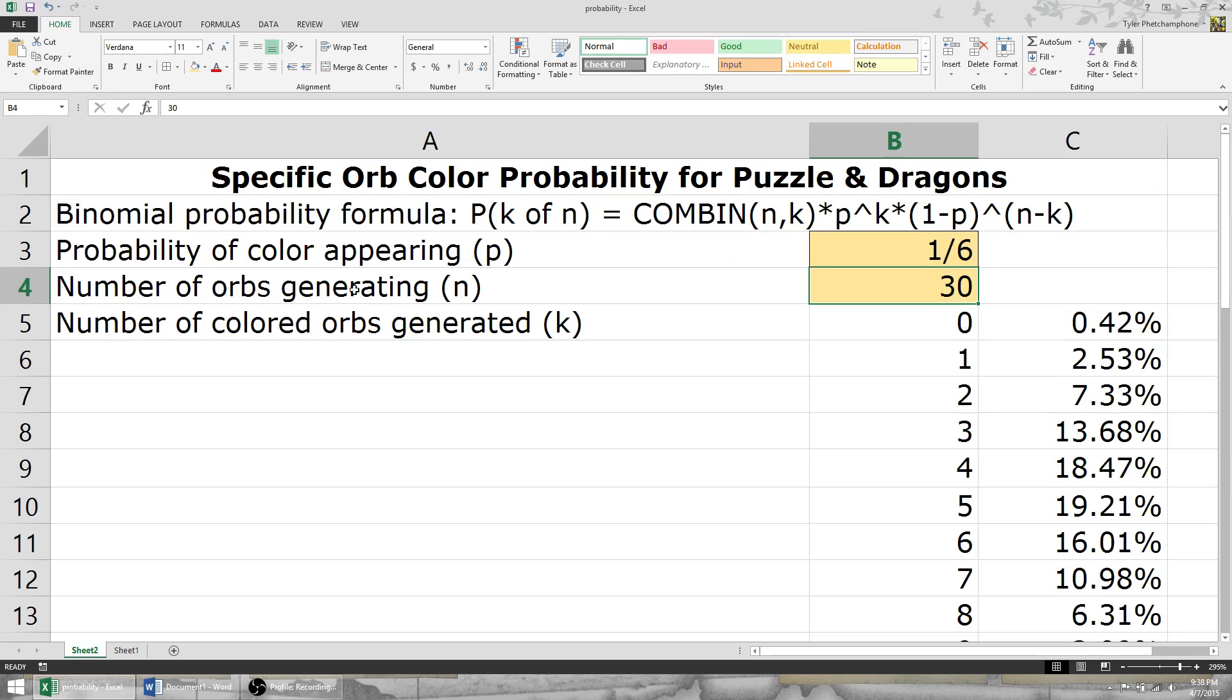The number of orbs generating is the number of orbs that are going to randomly spawn you that color. I've put 30 here because, let's say, in our example, we're barely entering a dungeon.